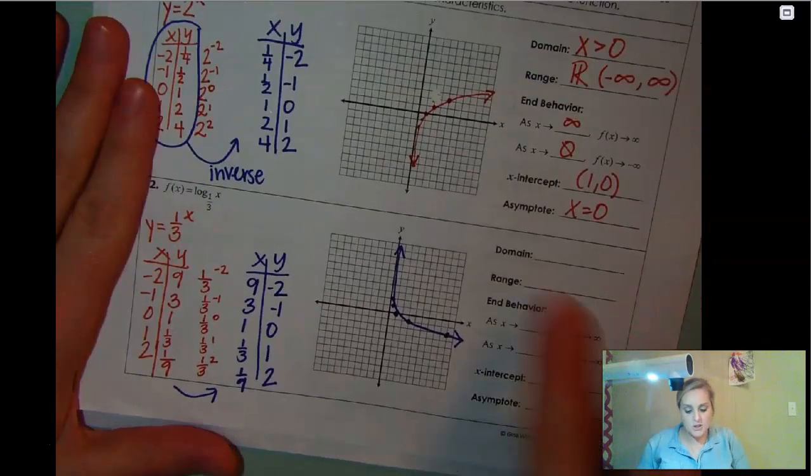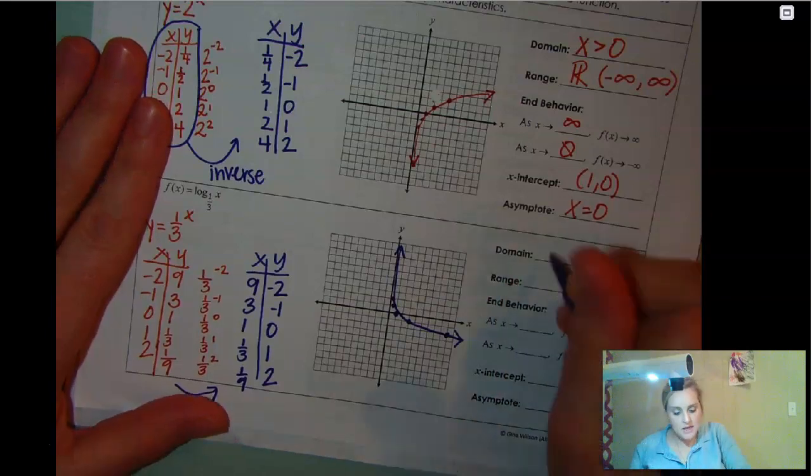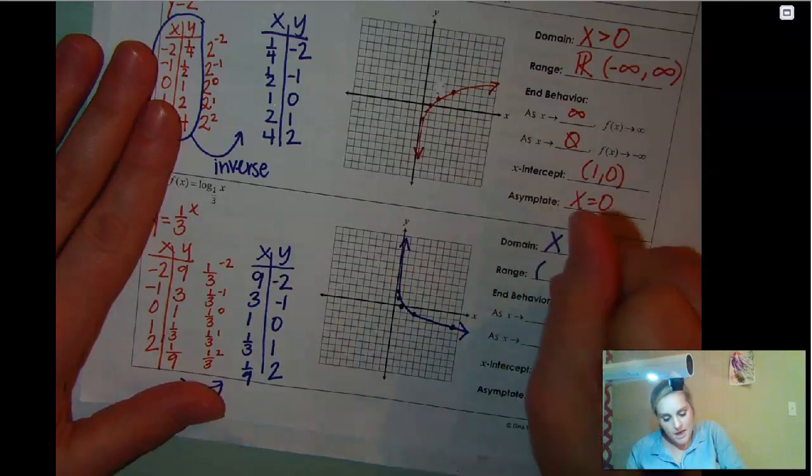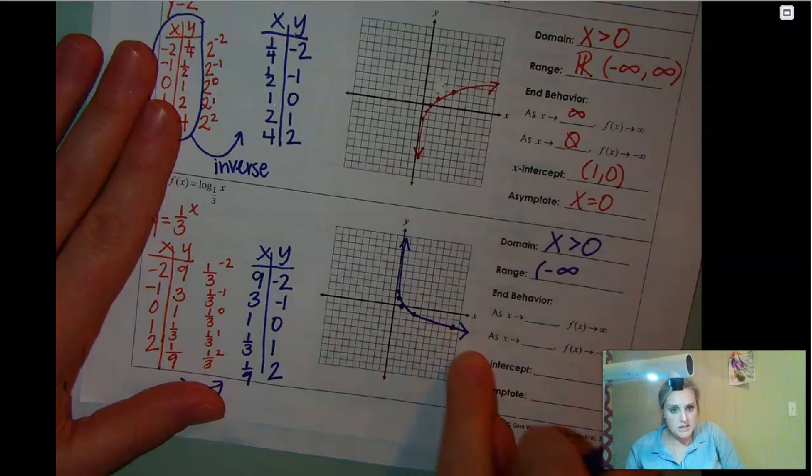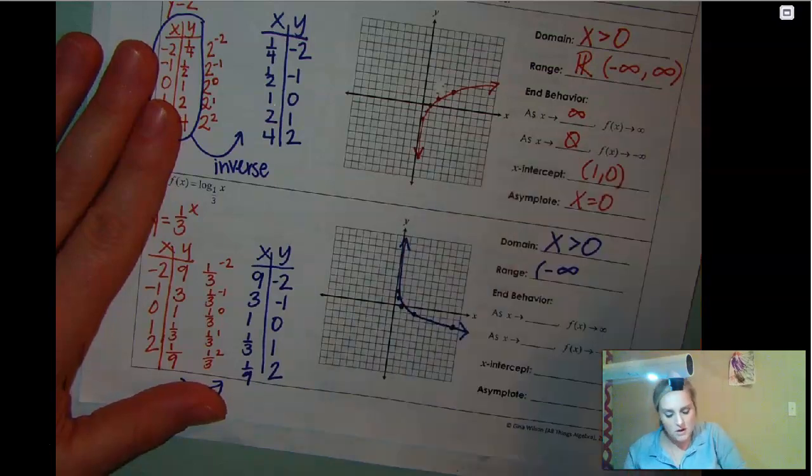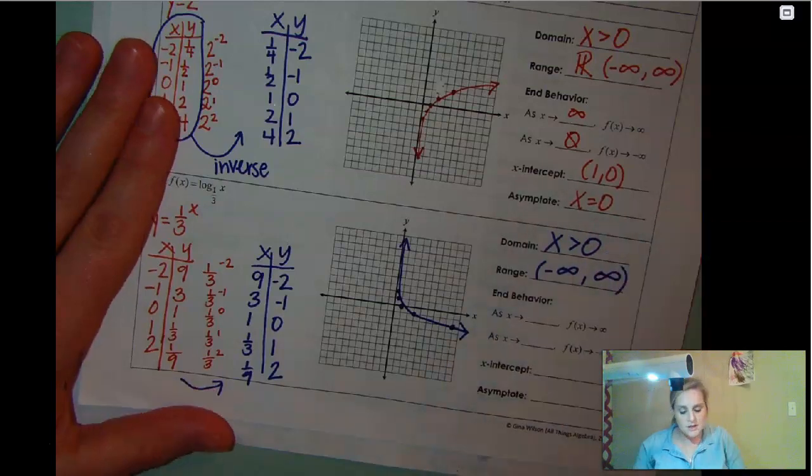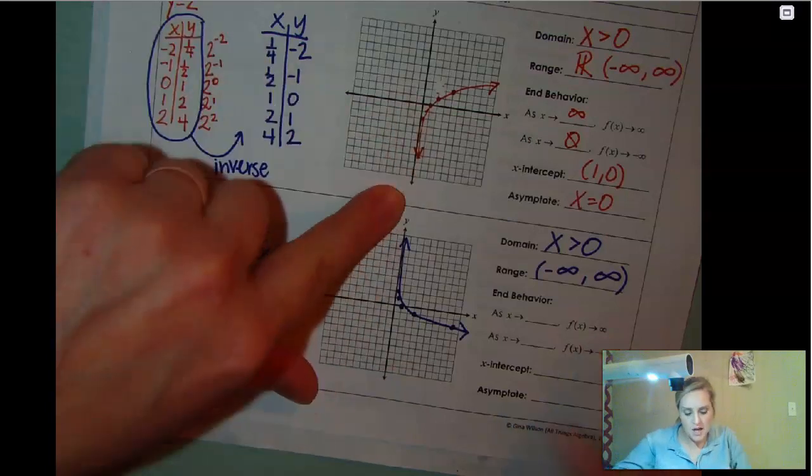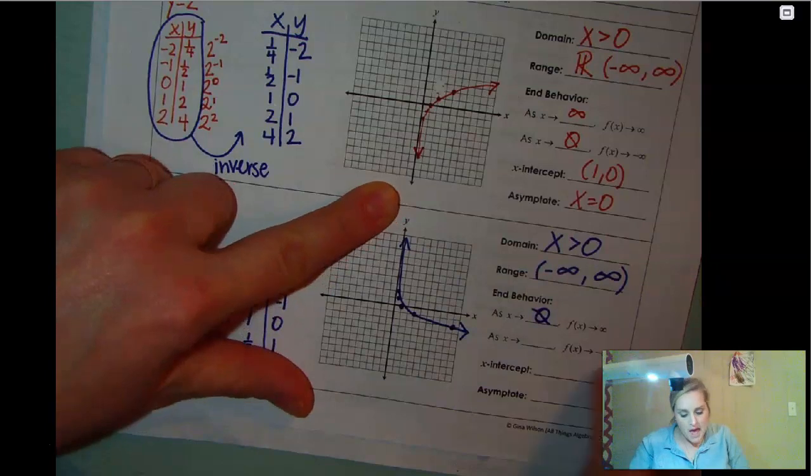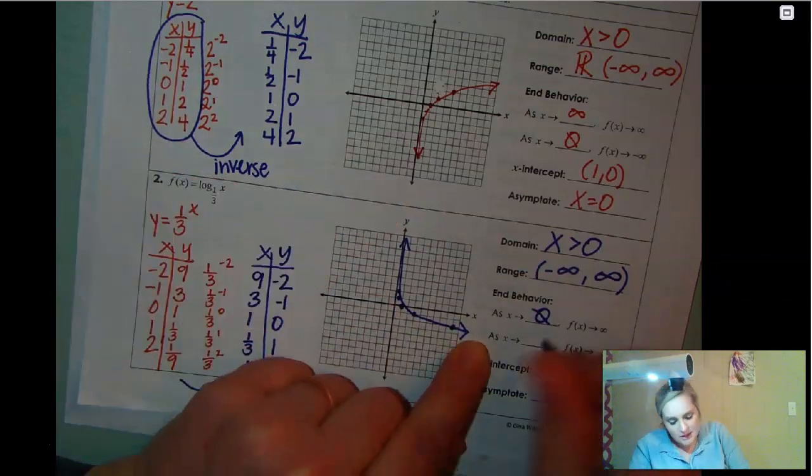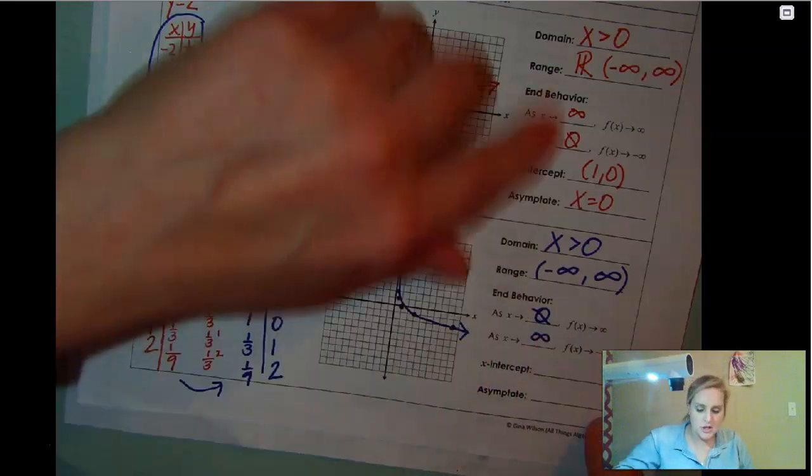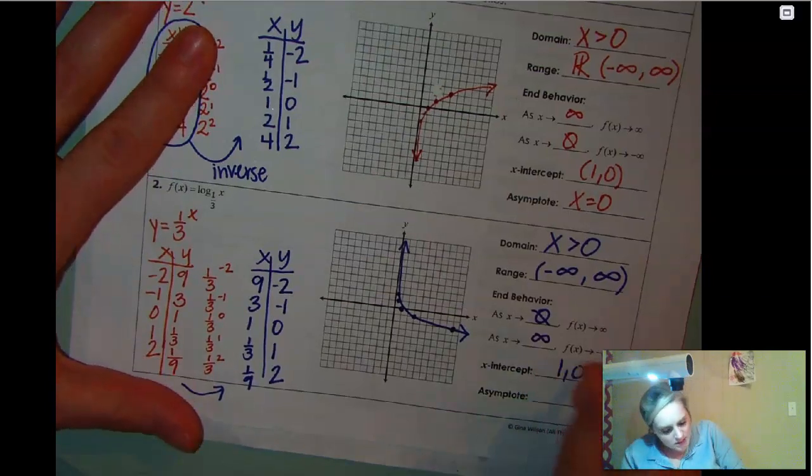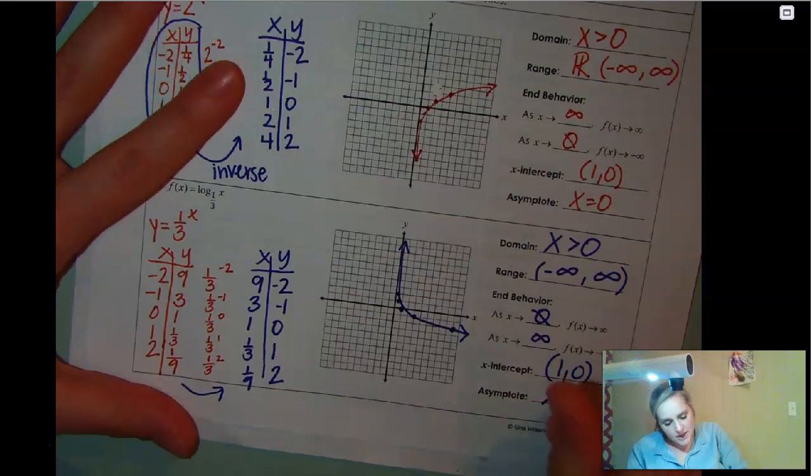Our domain is our x values. Again, those are the same. They're going to be greater than zero. Our range, same thing. We're going from negative infinity to positive infinity. It's going to be all real numbers. As x approaches blank, y approaches infinity. So y is approaching infinity here, so it's approaching zero. And negative infinity is this way. That's going to be positive infinity. So these pretty much are just going to switch depending on whether it's growth or decay. Our x-axis for this one is still one zero. And my asymptote is still x equals zero.